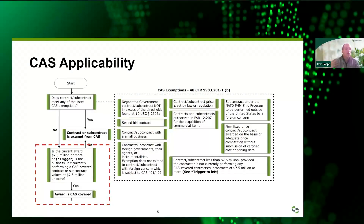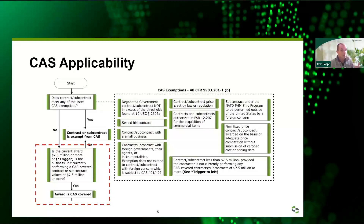How do you know if CAS or cost accounting standards is applicable to you? There is a nice flowchart we'll go through as a quick refresher. The big thing is you need a triggering event—a single award that is over 7.5 million. After you hit that 7.5 million, you are working towards a 50 million mark of anything over the TINA threshold. If you have that triggering event of 7.5 million, you would be considered CAS covered.